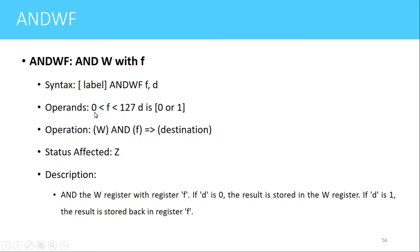The file register F can take any value from 0 to 127, representing a RAM memory location, or it can take the name of any SFR. D can take the value either 0 or 1. The operation performed is that the value present in the W register is ANDed with the file register, and the result is stored in the destination register. The flag affected is the Z flag.